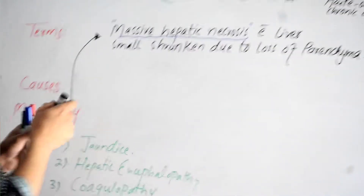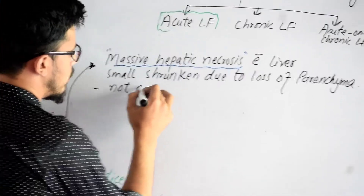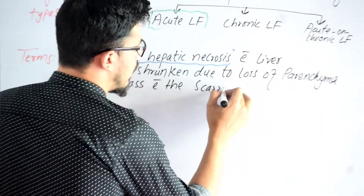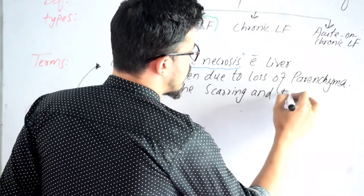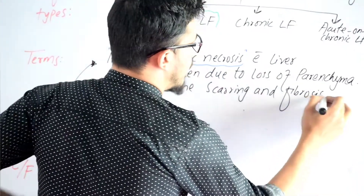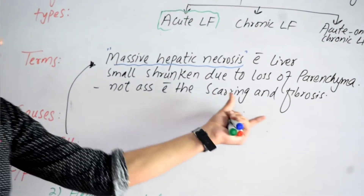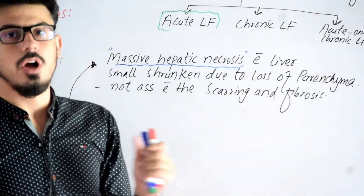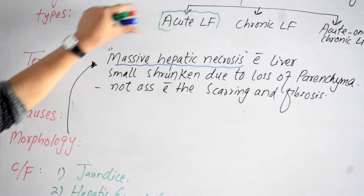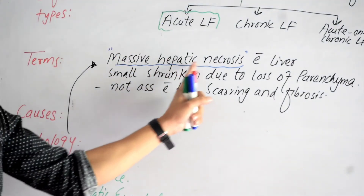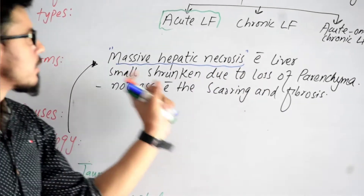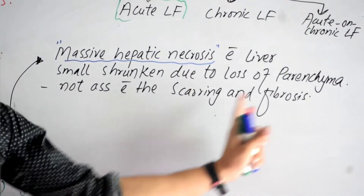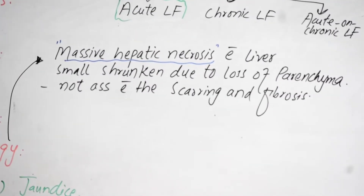In the morphology of acute liver failure, there will be massive hepatic necrosis, the liver will be small and shrunken due to loss of parenchyma, and there is no association with scarring and fibrosis. Now coming to the clinical features.